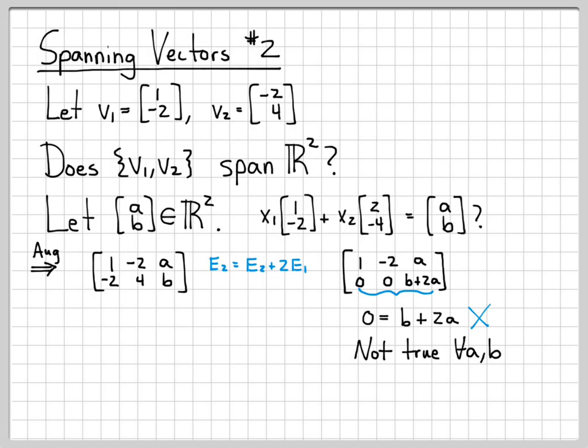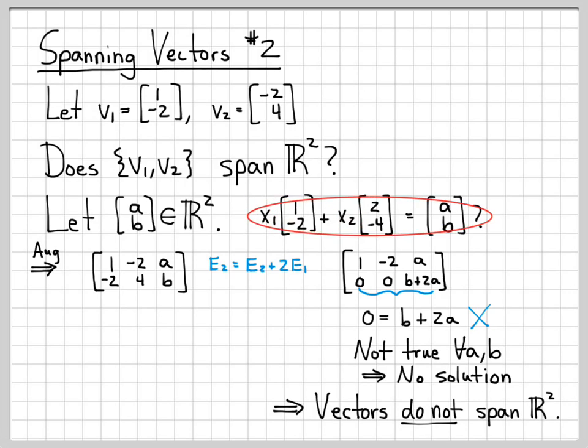We've encountered a contradiction in trying to solve for x1 and x2 for arbitrary values of a and b. That means there is no solution in general to this system of equations. There are solutions for some particular values of a and b, but not for all values. So these vectors do not span R². We could not find x1 and x2 in general to make this equation true.